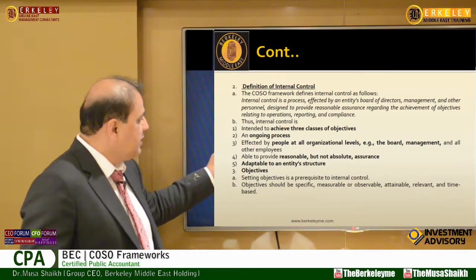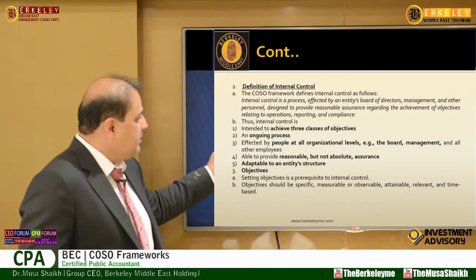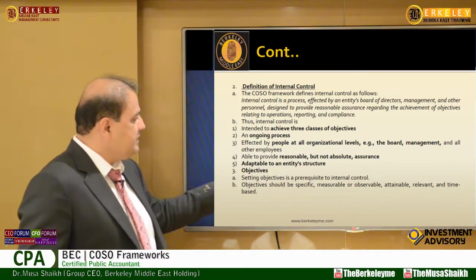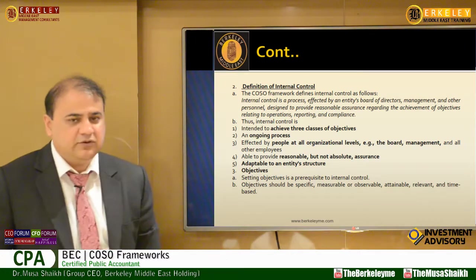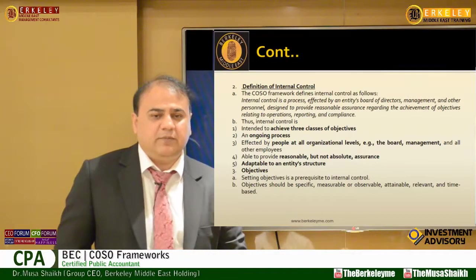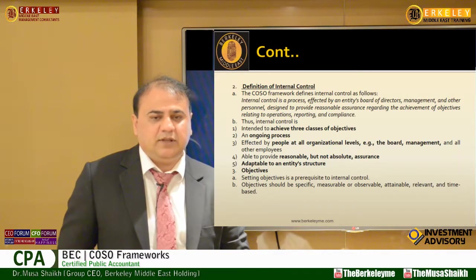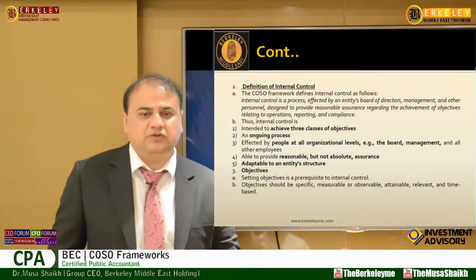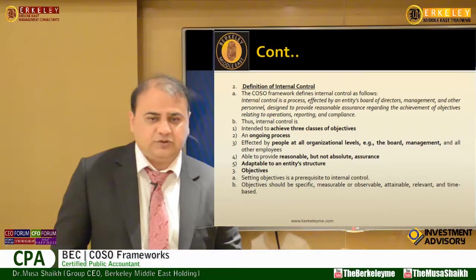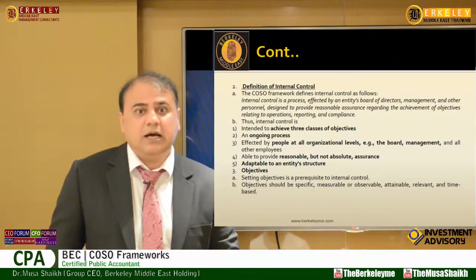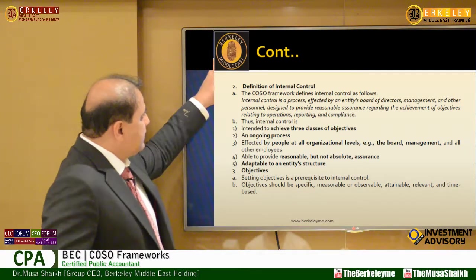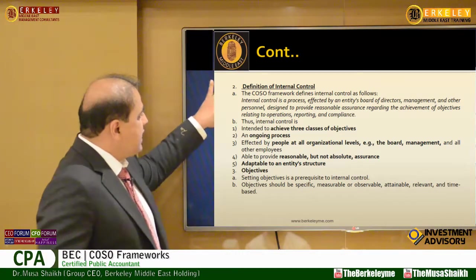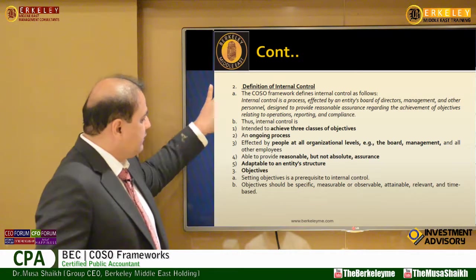Every day there is a new scenario. Internal control provides reasonable assurance, not absolute assurance. Having an internal department in a company does not mean you have no issues — you may still have issues. It gives reasonable assurance, not absolute assurance. The framework says internal control has objectives: first, operational objectives; then reporting objectives.